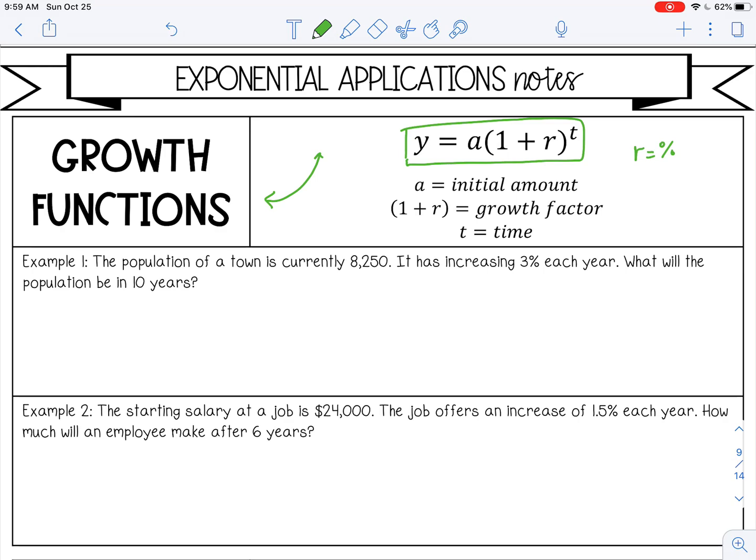Let's look at the first one. The population of a town is currently 8,250, so that's what we're starting with, that's our a. It's increasing at 3% each year, so this 3% is my r. And then what will the population be in 10 years? That's my t. Let's make our formula here. So we're starting at 8,250.